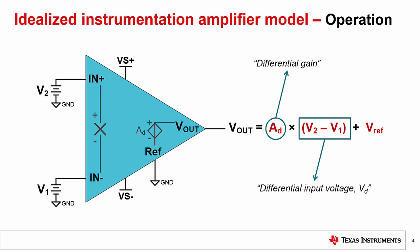In this example, we have a generic IA. The inputs are set to generic voltages V1 and V2. The difference between these two inputs is simply V2 minus V1, and we refer to this as the differential input voltage, VD.